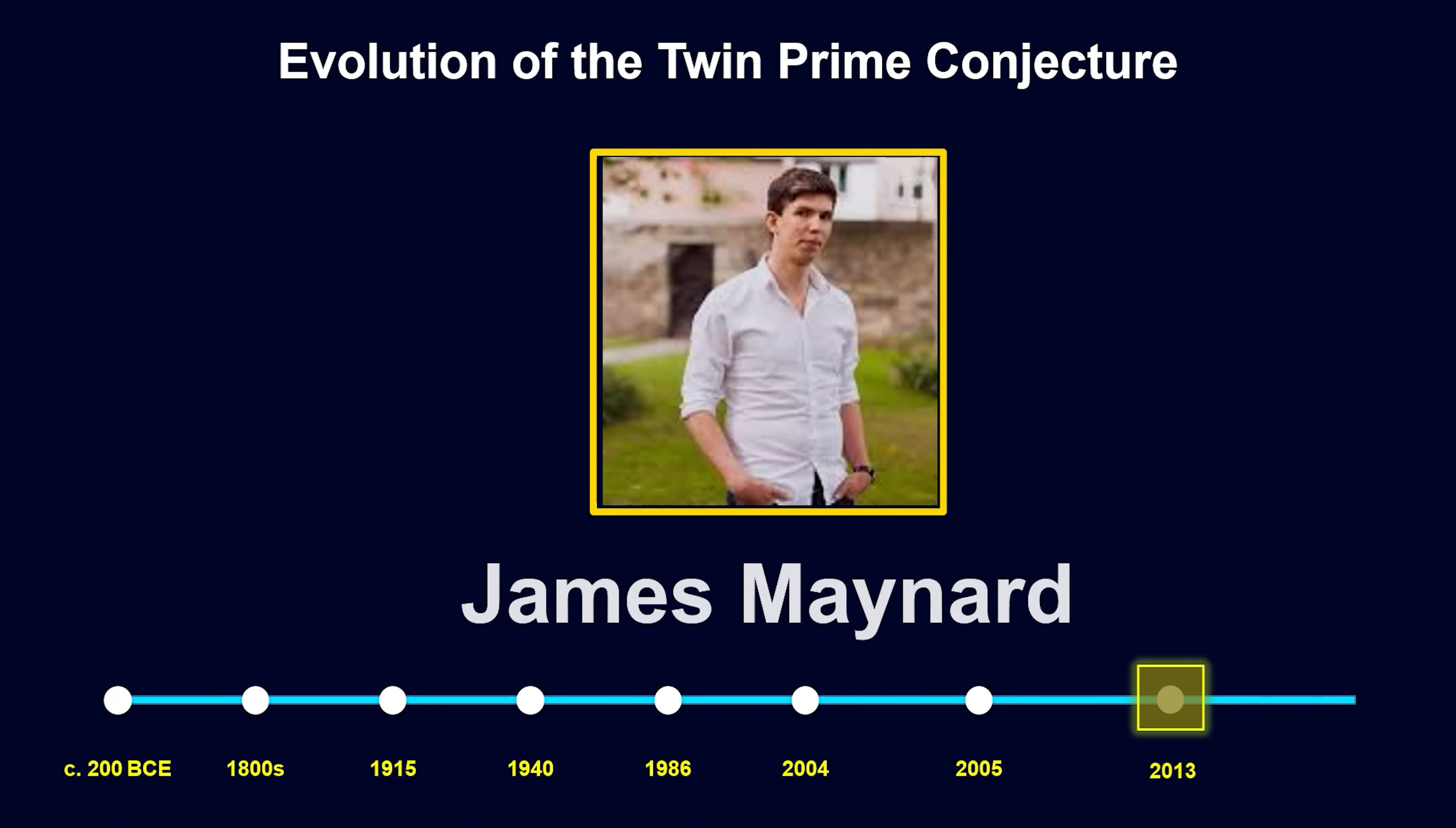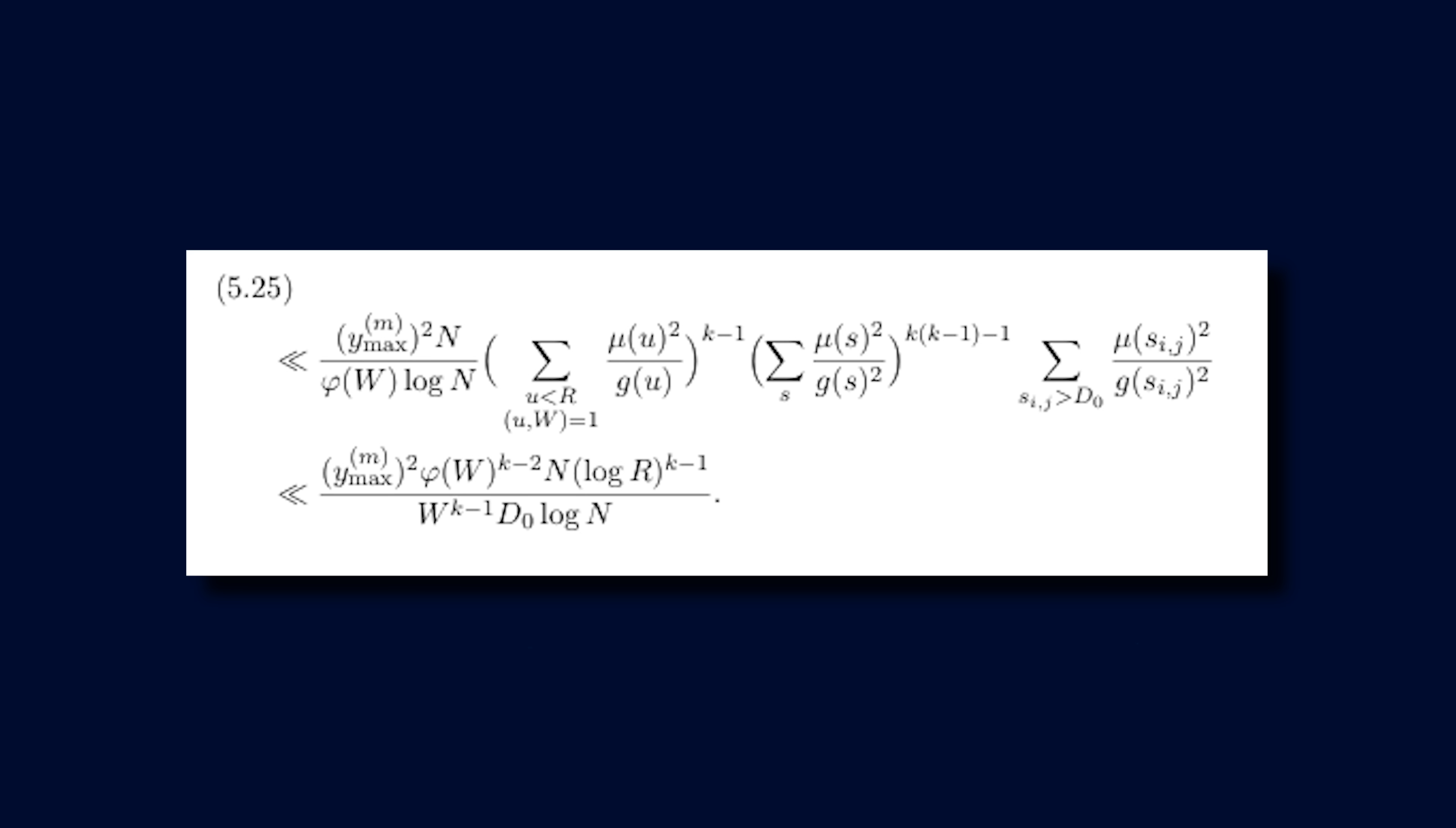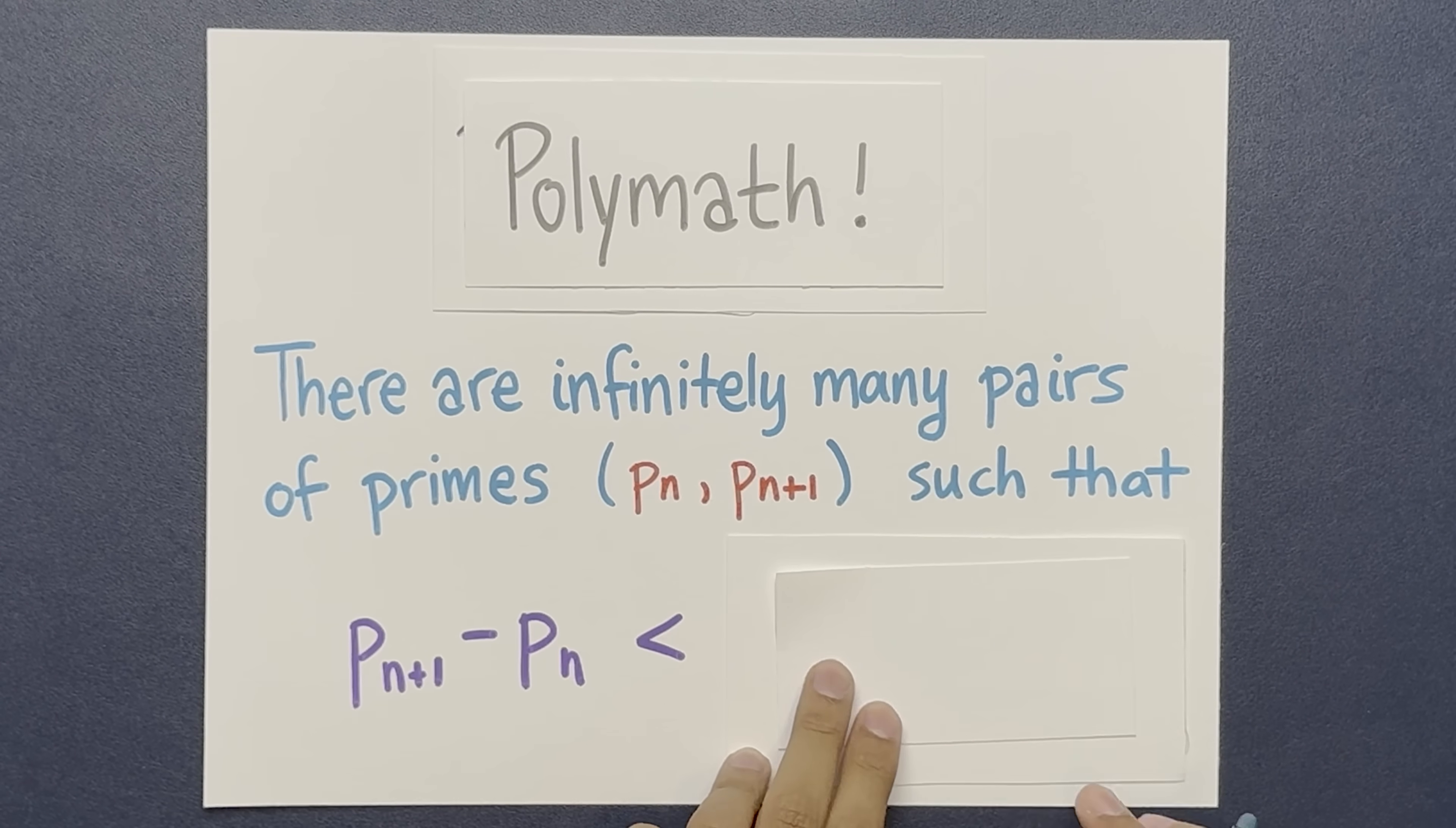Then a bit later, James Maynard improved the bound. He was able to reduce 70 million to 600. Now that alone would be a breakthrough, but his techniques also showed something even deeper. It showed bounded gaps for clusters of k primes for any natural number k. For this and related results, Maynard was awarded the field medal in 2022. Later by the polymath project, this number was decreased to 246, where it currently stands.